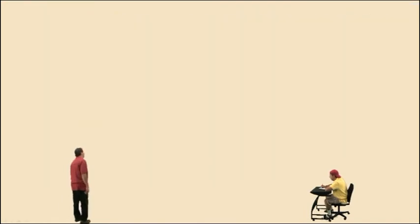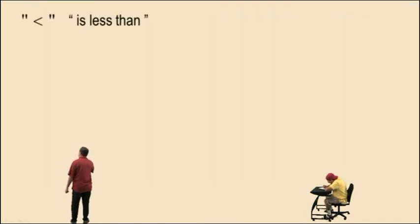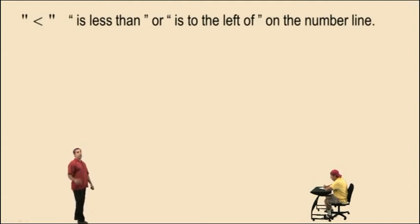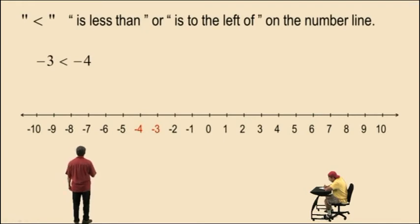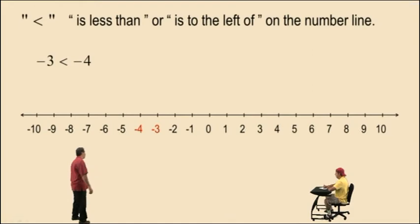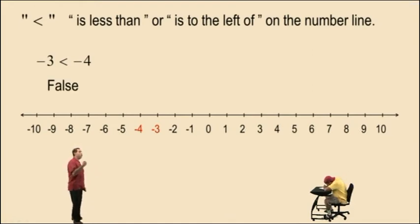So let's look at the less than symbol. Here is a less than symbol. Notice it looks like an arrowhead pointing to the left, because it's actually referring to the number line. So 'is less than' can be interpreted as 'is to the left of' on the number line. So let's take a look at this problem: negative 3 is less than negative 4. Is this true or false? Let's look at the number line. Charlie, is negative 3 to the left of negative 4 on the number line? Nope. So this is a false statement — negative 3 is actually greater than negative 4, because negative 3 is to the right of negative 4 on the number line.